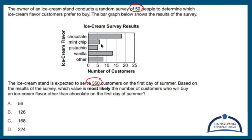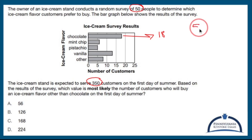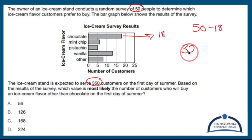I'm going to look at my original picture here. Comparing this graph, it looks like chocolate is going to be 18. In order to find the others, I can either add these up, or if I know that there were 50 people surveyed, then the others is going to be 50 minus 18, which is 32.